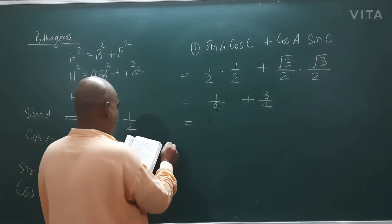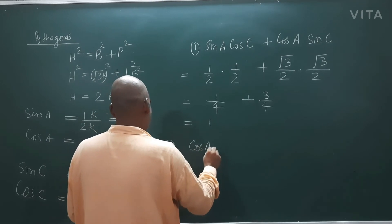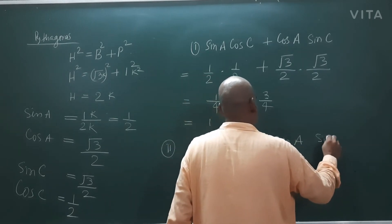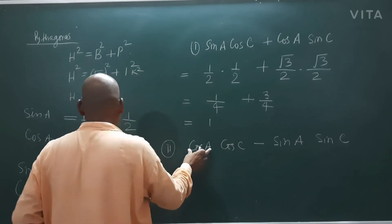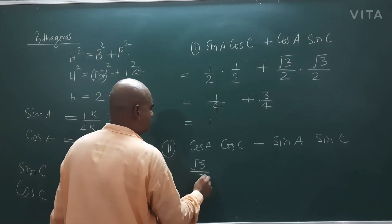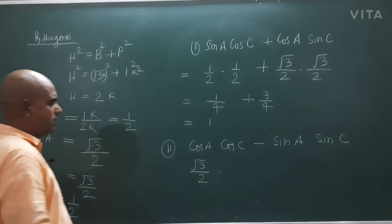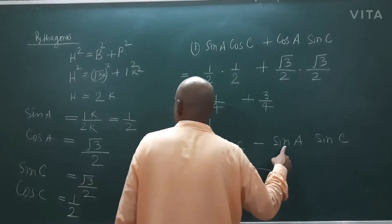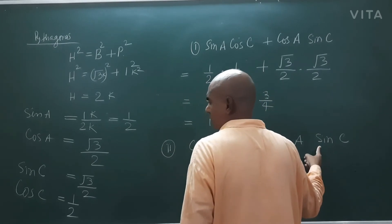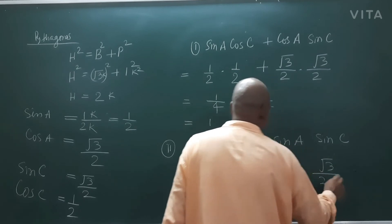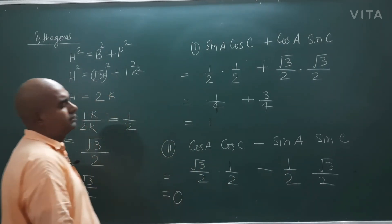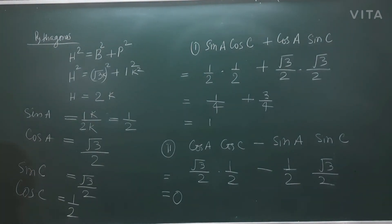Let me solve the second part also: cos A cos C minus sin A sin C. Cos A is root 3 by 2, cos C is 1 upon 2, sin A is 1 upon 2, sin C is root 3 by 2. This gives root 3 by 4 minus root 3 by 4, which equals 0. Write down the first part and the second part.